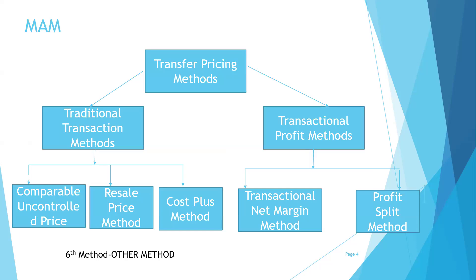Coming to the methods: there are essentially five methods available, broadly classified into two categories. The first is traditional transaction methods, which consist of the comparable uncontrolled price method, the resale price method, and the cost plus method. The second is transactional profit methods, which consist of the transactional net margin method and the profit split method.